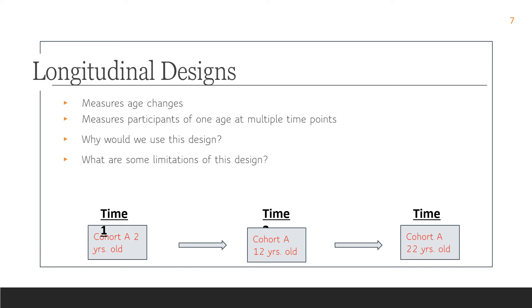So why would I use this design? Well, this can be a great type of design because I can study specific people over time. I can study, for example, Samantha when she's two, and then I can study her again 10 years later, and I can see specifically what Samantha's growth is, and this gives me a sense of earlier and later links because I got to see Samantha at earlier and later times.